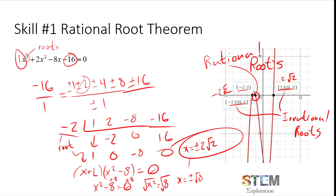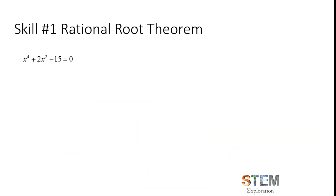We can observe that each of these roots has a multiplicity of 1 based on their linear behavior, and we can see that from the down-then-up and up-then-down behavior on the graph. The rational root theorem lets you do that. Now looking at this quartic polynomial, we know there is a total of 4 roots, and some of them might be rational — or none of them might be rational.